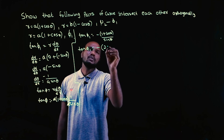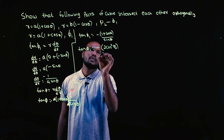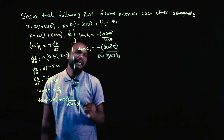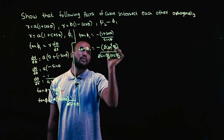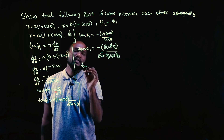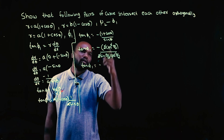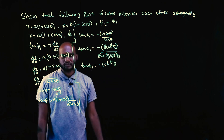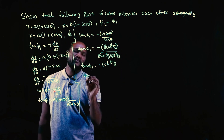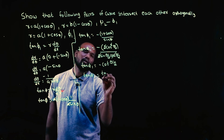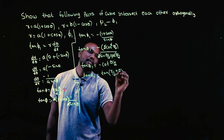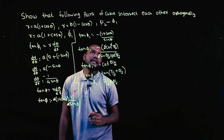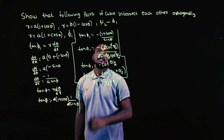Applying trig identities: 1 + cosθ = 2cos²(θ/2), and sinθ = 2sin(θ/2)cos(θ/2). After cancelling the 2s and one cos(θ/2), we get tan φ₁ = -cos(θ/2)/sin(θ/2) = -cot(θ/2). This equals tan(π/2 + θ/2), so φ₁ = π/2 + θ/2.